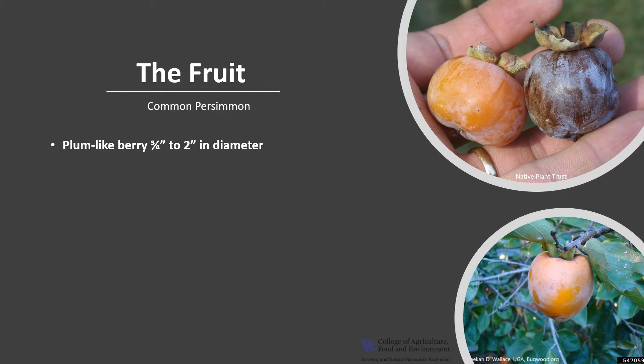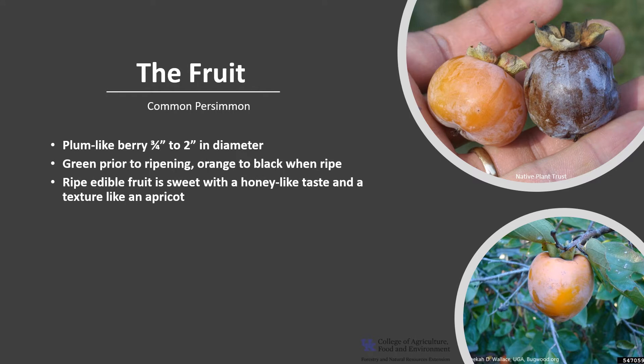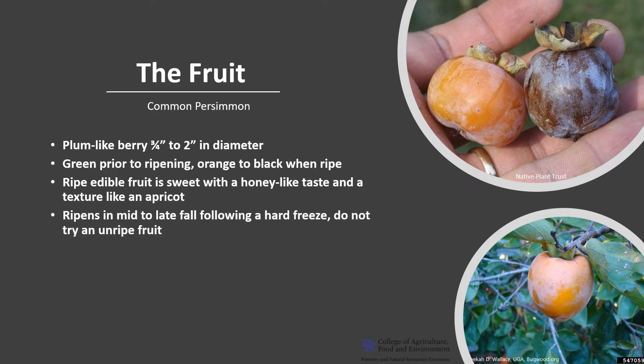The flowers are wind and insect pollinated, and persimmon flowers are useful in the production of honey. The fruit is a plum-like berry that's three-fourths to two inches in diameter, green prior to ripening, turning orange to black when ripe. The ripe edible fruit is sweet with a honey-like taste and a texture similar to apricot. The fruit ripens in mid to late fall following a hard freeze. Make sure you do not try an unripe fruit — you will not forget the very bitter, mouth-puckering, and numbing taste.